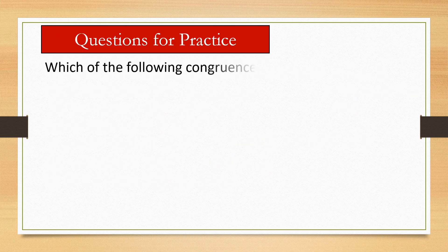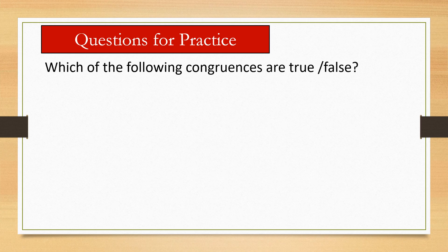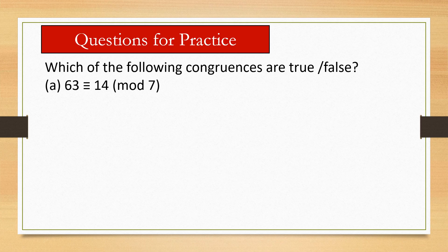Which of the following congruences are true or false? 63 is congruent to 14 modulo 7. So you can check 63 minus 14, 49, yes, it is true.